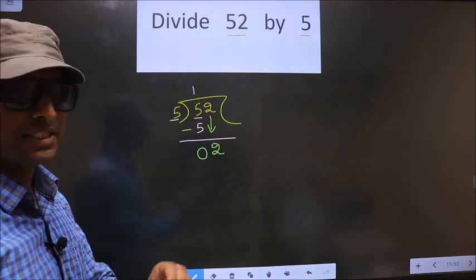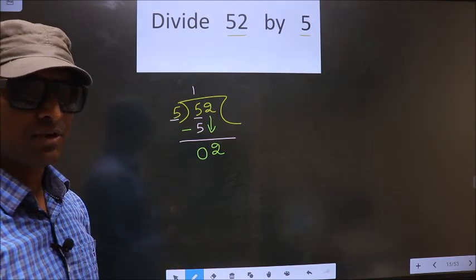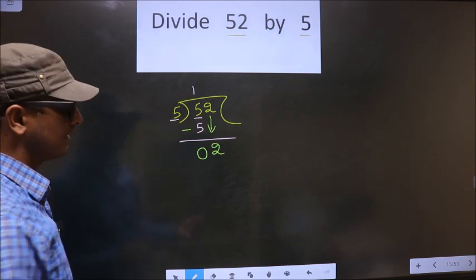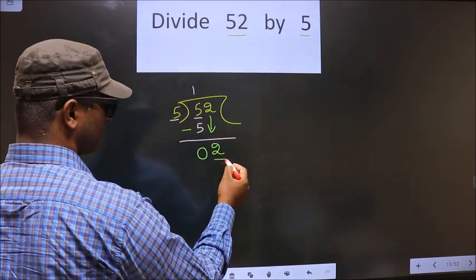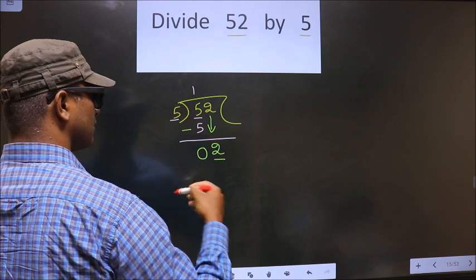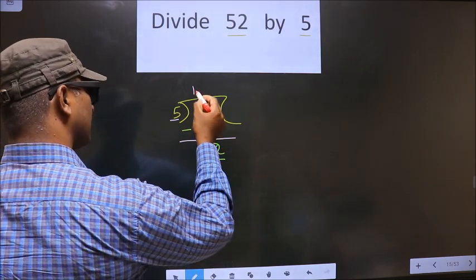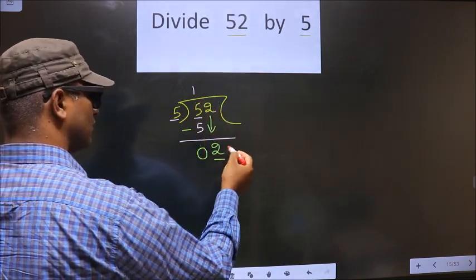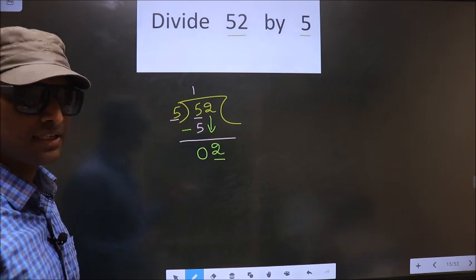This is where the mistake happens. What is the mistake? Here we have 2. 2 is smaller than 5. So what they do is, they put a dot here and take 0 here. Which is wrong.